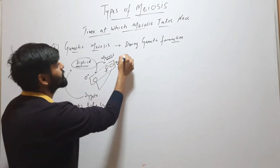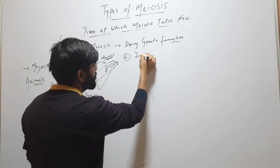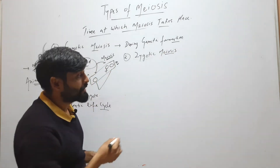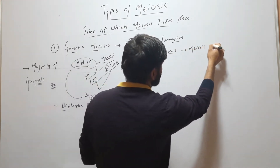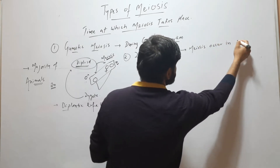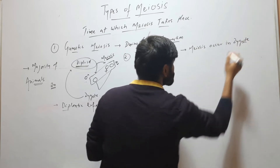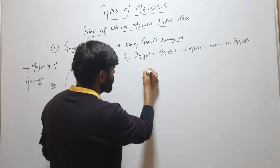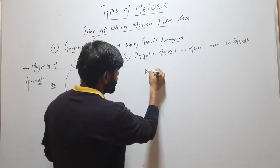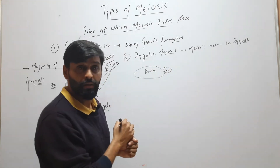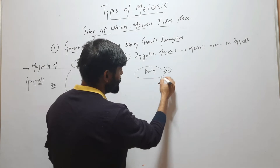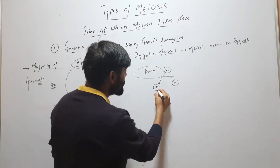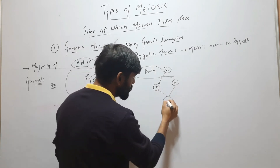The next, second type, is zygotic meiosis. Here, meiosis occurs in the zygote — the zygote divides by meiosis. Here you can see that the body of the organism is haploid. This body forms gametes, which are also haploid. These gametes fuse to form a zygote, which is 2N.